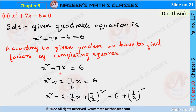The middle term 7x is written as 2·(7/2)·x. Since the b² term is not available, we add (7/2)² on both sides. This gives x² + 2·(7/2)·x + (7/2)² = 6 + (7/2)².